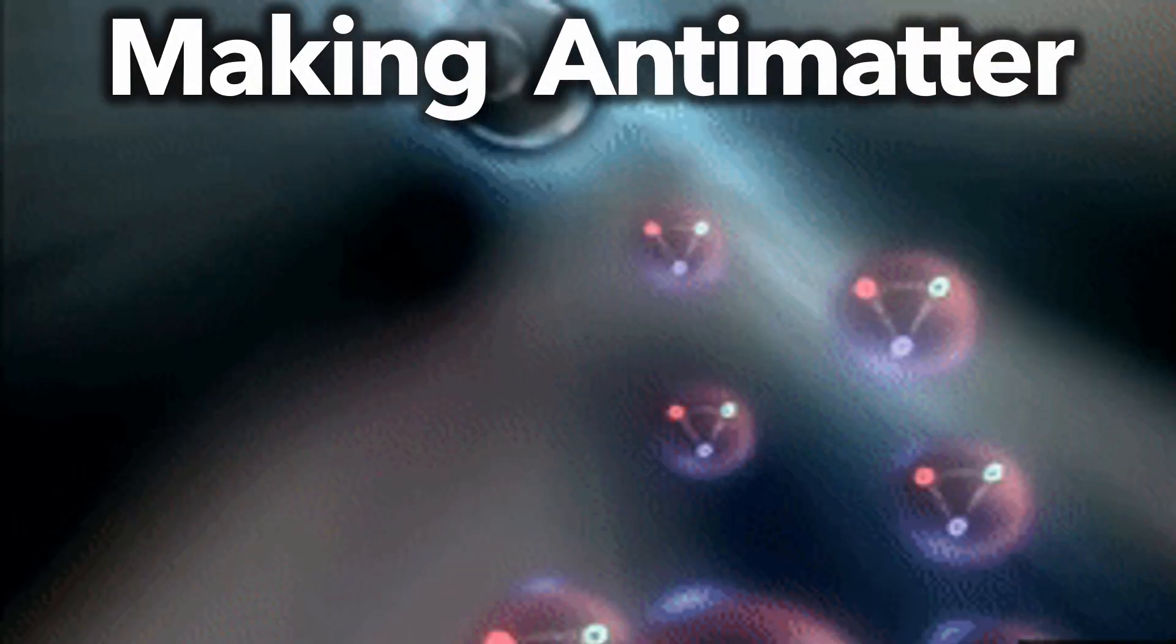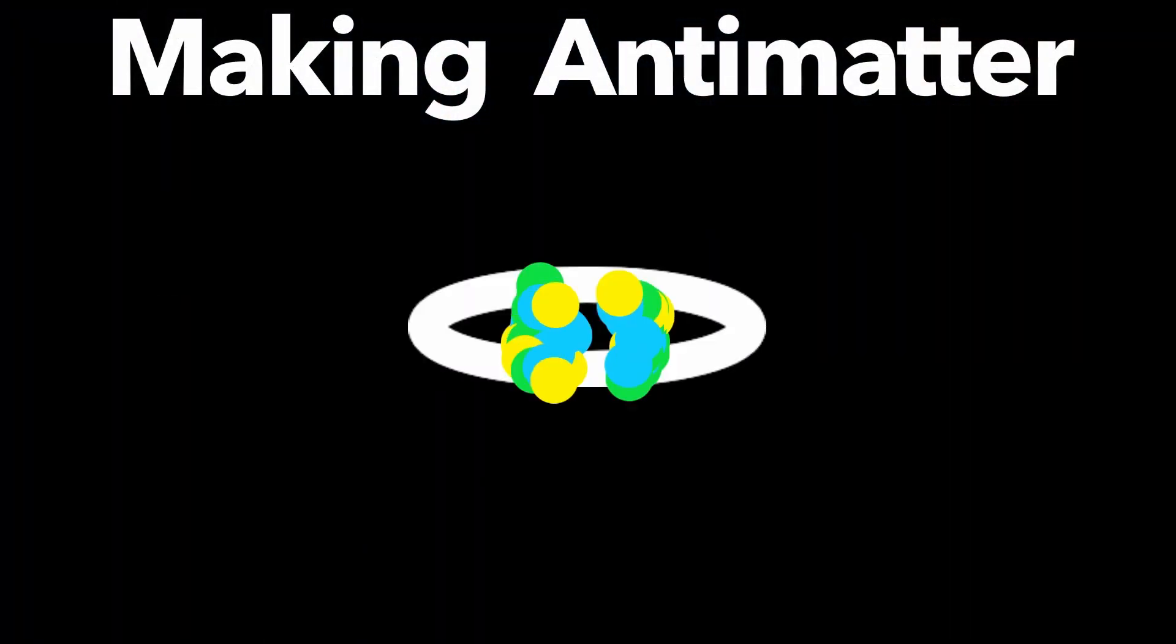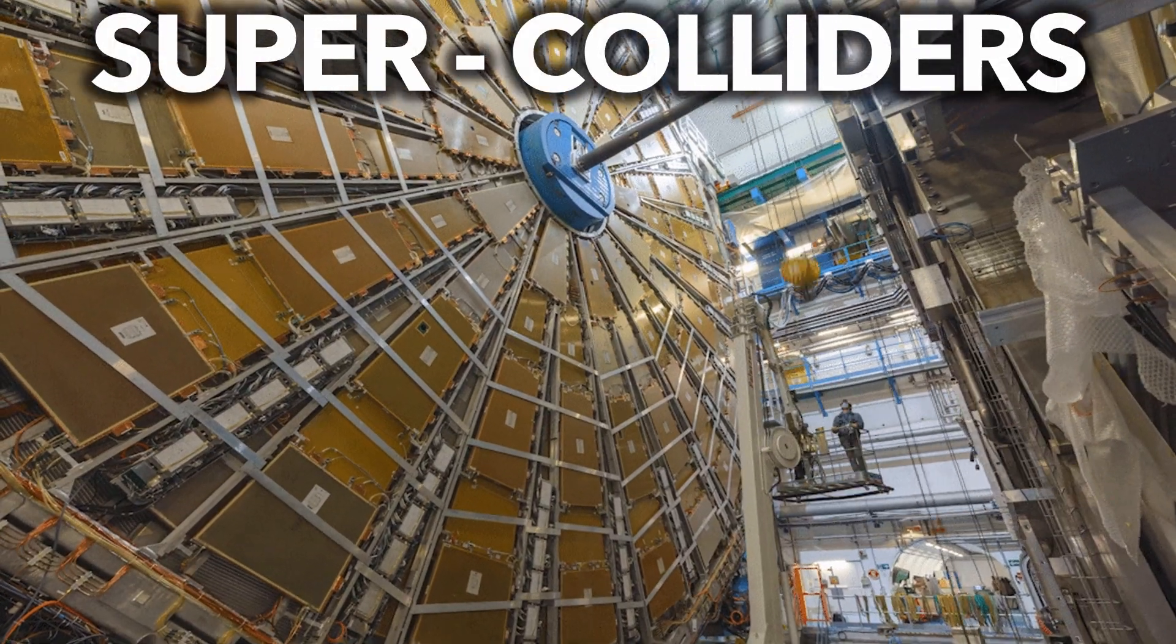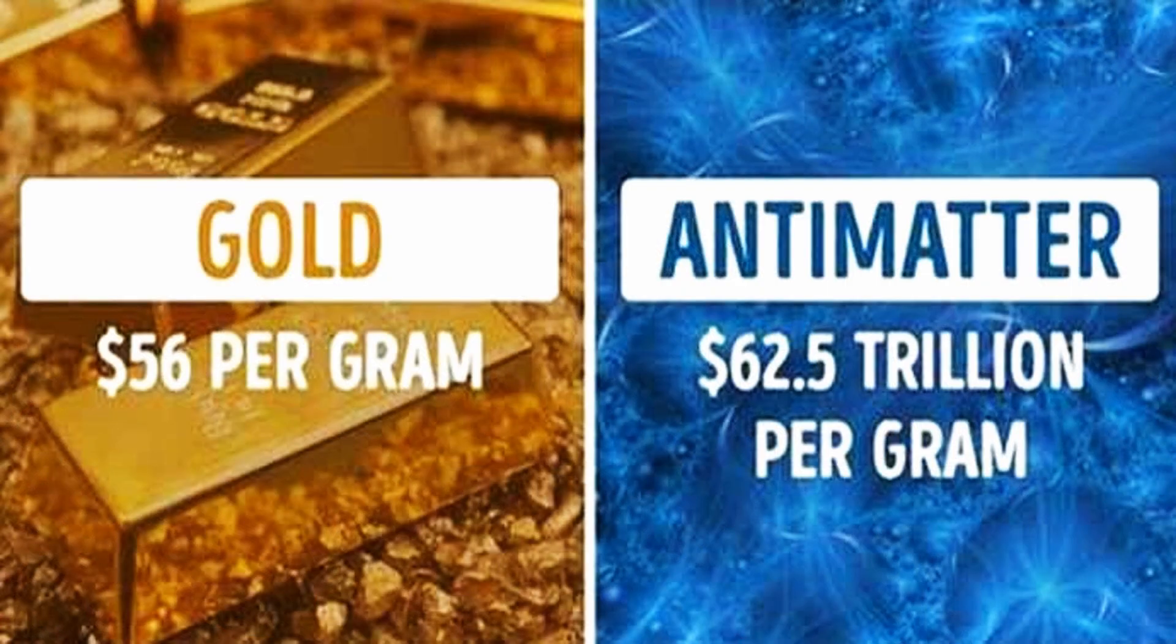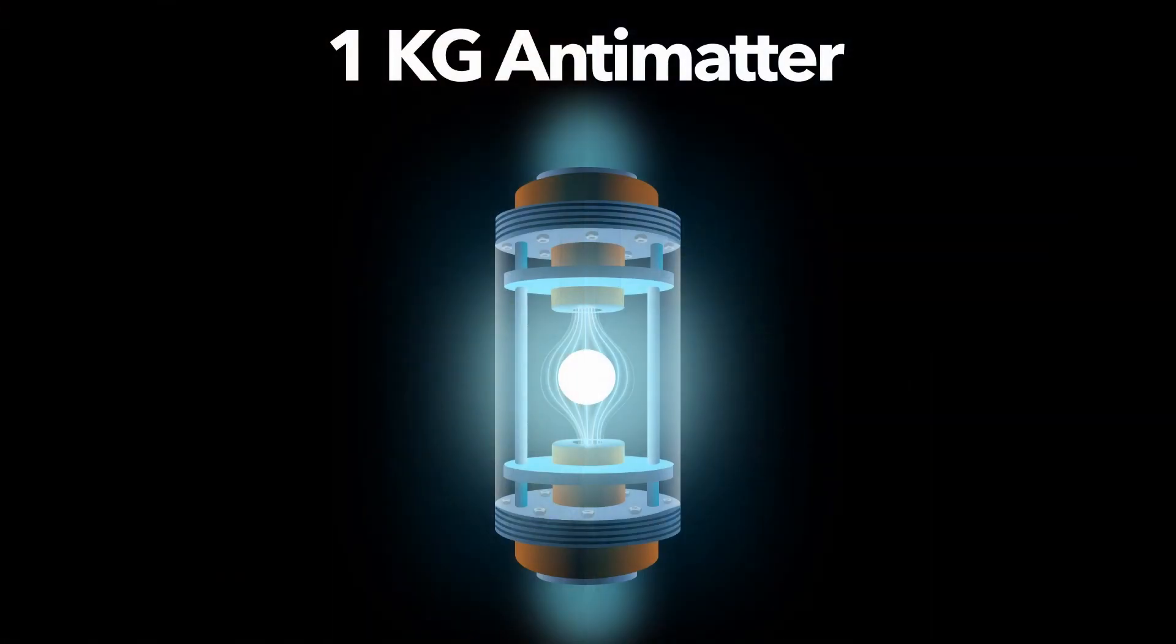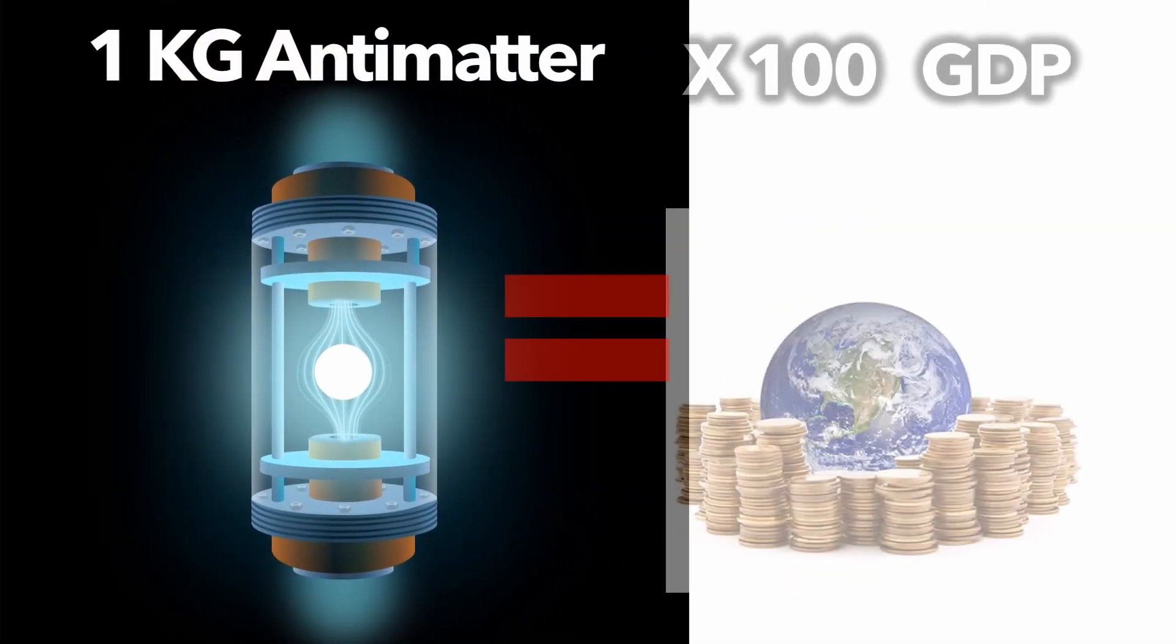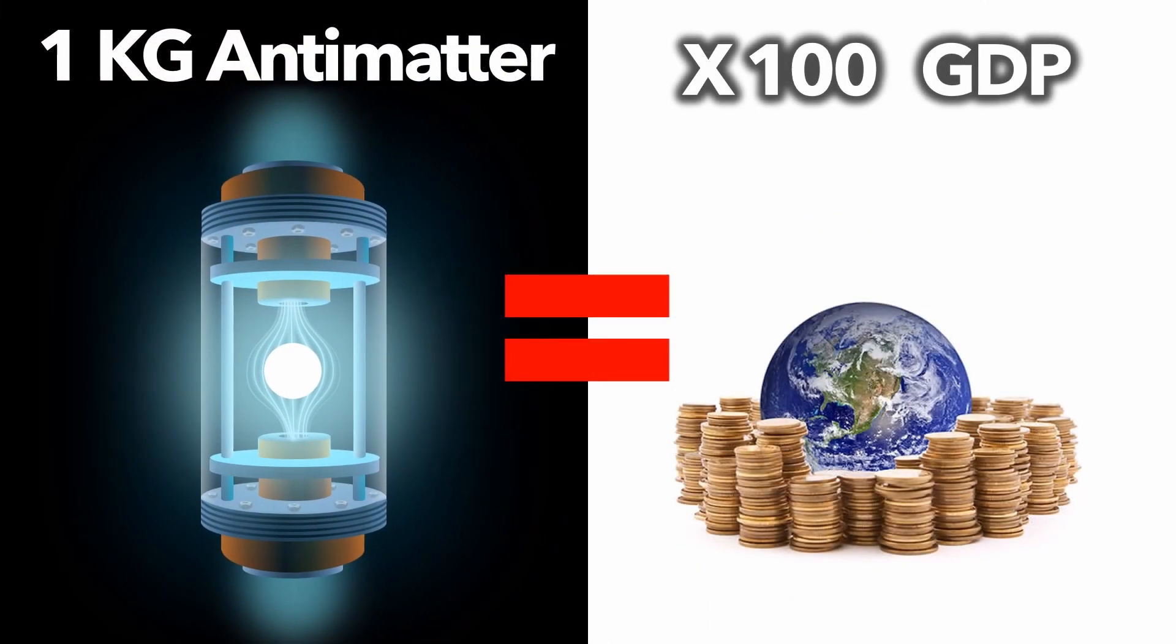Fortunately, creating antimatter requires very expensive atom smashers called supercolliders, making it by far the most expensive substance on Earth. In fact, making 1 kilogram of antimatter requires about 100 times the entire world's annual GDP. So, you're safe for now.